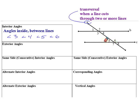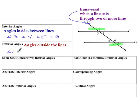Exterior angles are the angles that occur outside those two lines — basically the opposite angles outside the lines. Those are going to be angles 1, 2, 7, and 8.